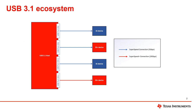The USB 3.1 specification defines two different connection speeds: SuperSpeed, which supports data rates up to 5 gigabits per second, and SuperSpeed Plus, which supports up to 10 gigabits per second. Any USB 3.1 connection will be limited to the highest common speed supported by both the USB host and USB device. This means a 5 gig USB host will always establish 5 gig USB 3 connections regardless of the device speed. A 10 gig SuperSpeed Plus connection is only possible when both the host and device support SuperSpeed Plus data rates.